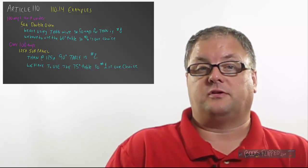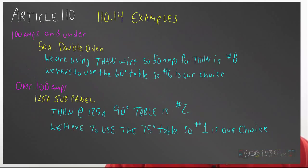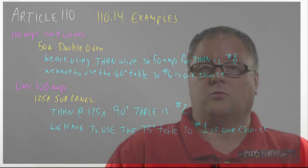All right, 125 amp subpanel. Let's use that for an example. If I'm using THHN and I am looking in the 75-degree column, I'm going to come up with my exact answer. But I'm using THHN, so what about the 90-degree column? Well, that's going to show us that we can use number 2. But once I look in the 75-degree column, I realize I'm going to have to use number 1.